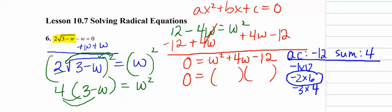And since our coefficient is a 1 for the W squared, then we know that our two groups are W minus 2, W plus 6. If we set the groups equal to 0, we get two solutions. We get W is 2 because we add 2 and W is negative 6.